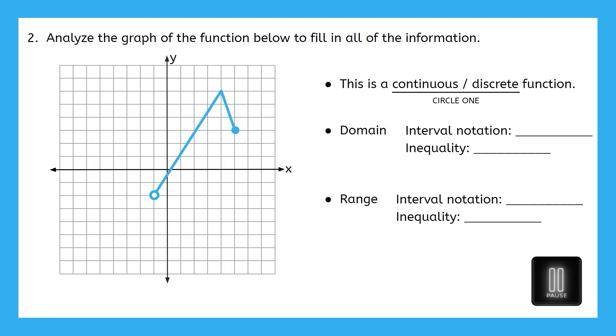Pause the video now and give this a go in your PDF. Then come back so we can go over it together. This function is a continuous function because it's represented by a single unbroken line. The domain, also known as all of my possible x values of this function, includes all of these real numbers between negative 1 and 5. Now, is negative 1 included in our solution or no? No, because the endpoint is not shaded. It's an open circle. So we have a curved bracket here. Is 5 included in our solution? Yes, because the endpoint is shaded. It's a closed circle. So we have a square bracket here. And we can write this as an inequality like so.